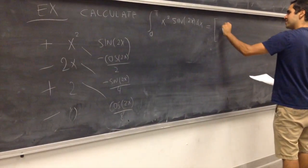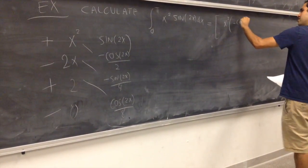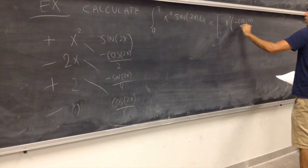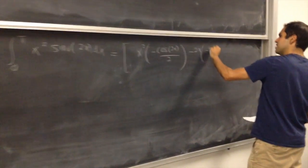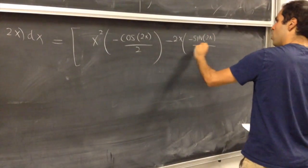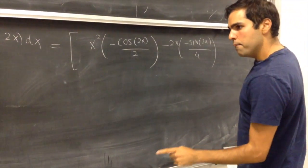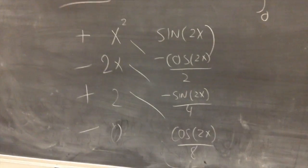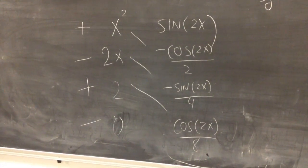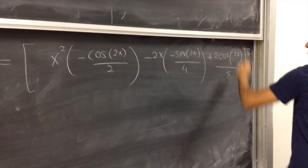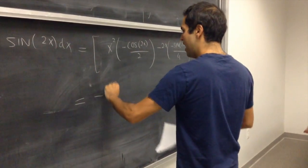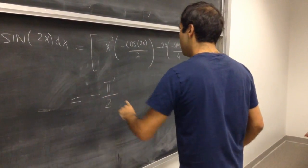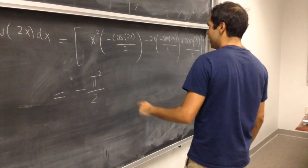So, this equals to x squared times cosine of 2x over 2, minus 2x sine of 2x over 4, plus 2 cosine of 2x over 8. You evaluate that from zero to pi, and you get minus pi squared over 2.